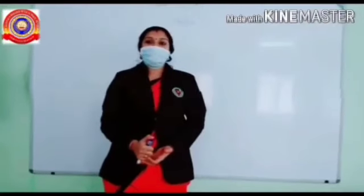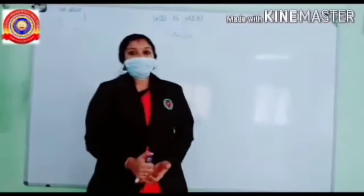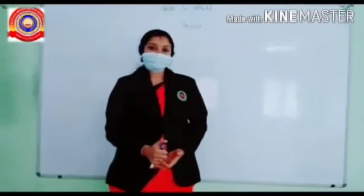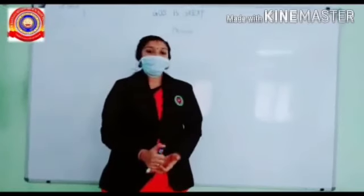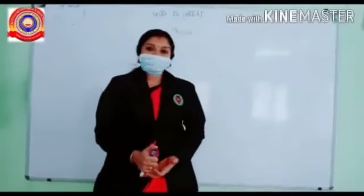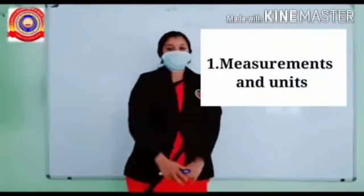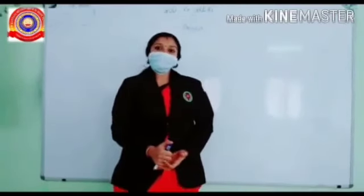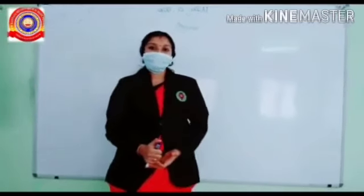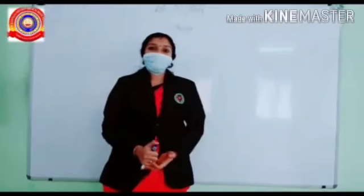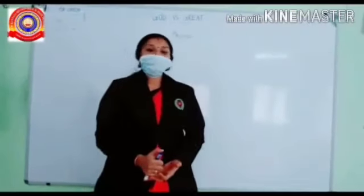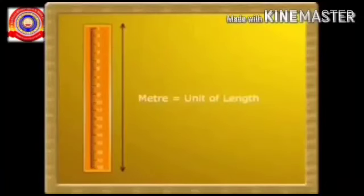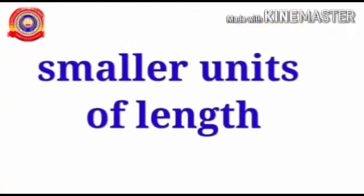Welcome back, students. Before entering our class, let us recollect our previous session. Our chapter name is Measurements and Units. We discussed the different scales used for measuring length in olden days, their difficulties, and the need for a standardized scale. This standardized scale for measuring length is the meter, and its symbol is the small letter m. Today we are going to study the smaller units of length.